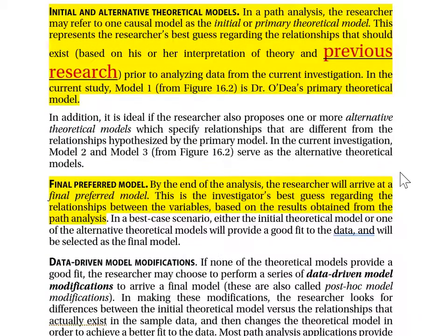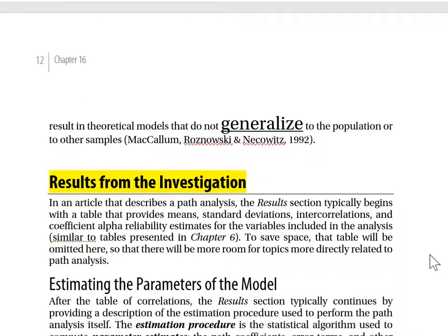Still on page 11, the section on the final preferred model: by the end of the analysis, the researcher will arrive at a final preferred model. This is the investigator's best guess regarding the relationships between variables based on the results obtained from the path analysis. We move to page 12 to see what results Dr. O'Day got when she performed her path analysis.